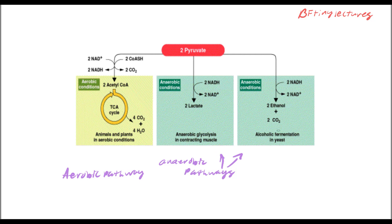In yeast, we exploit this process — yeast converts sugars to glucose, then glucose to pyruvate, and pyruvate into ethyl alcohol. Here's a fun fact: goldfish can actually generate alcohol. Since their bodies are always moving and there isn't much oxygen in the water, the pyruvate is converted into ethanol — which is why we change the water for our goldfish or keep a filter in the aquarium.